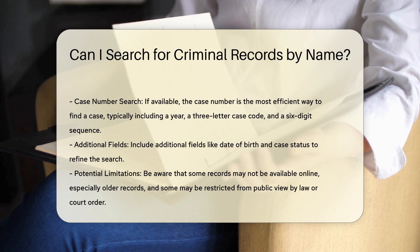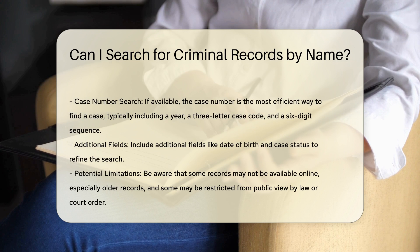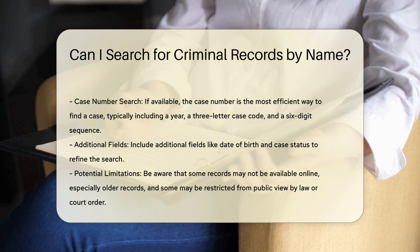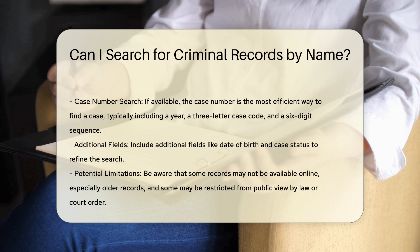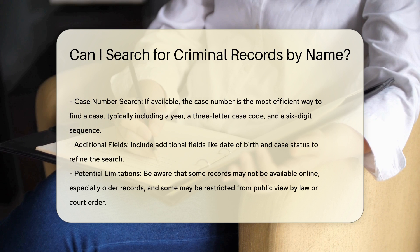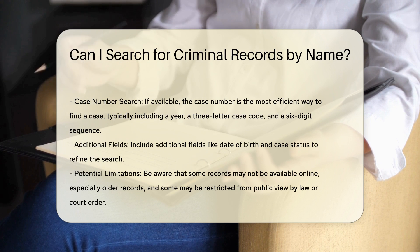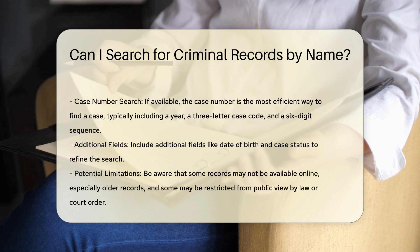Searching online. Some courts provide online access to criminal court records. For instance, you can search on the website of the clerk of courts for the specific county where the case was filed. You may need to enter the last name and first name, and optionally, the first few letters of the first name.